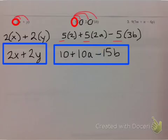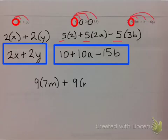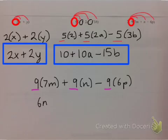And for number 3, we need to distribute that 9 to every single term. So we have 9 times 7m plus 9 times n minus 9 times 6p. Do you guys see how our 9 got distributed to every single term? So we get 63m plus 9n minus 54p.